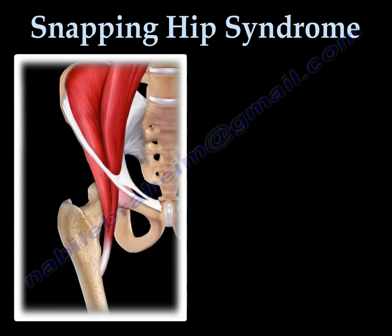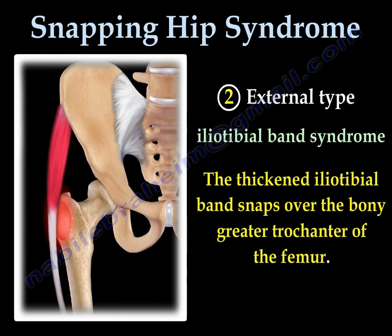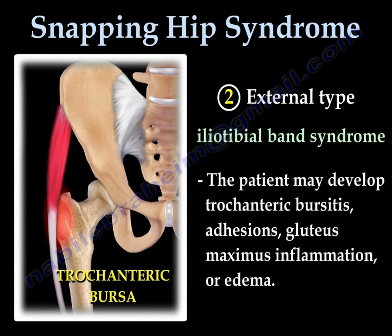External type is called iliotibial band syndrome. The iliotibial band is thickened and it snaps over the bony area of the greater trochanter of the femur. The patient may develop trochanteric bursitis, adhesions, gluteus maximus inflammation, or edema.